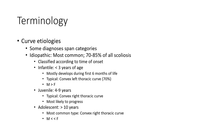Classified according to time of onset. Infantile: less than 3 years of age, mostly developed during the first 6 months of life. Typical convex-left thoracic curve in 70%. Male more than female. Juvenile: 4 to 9 years.